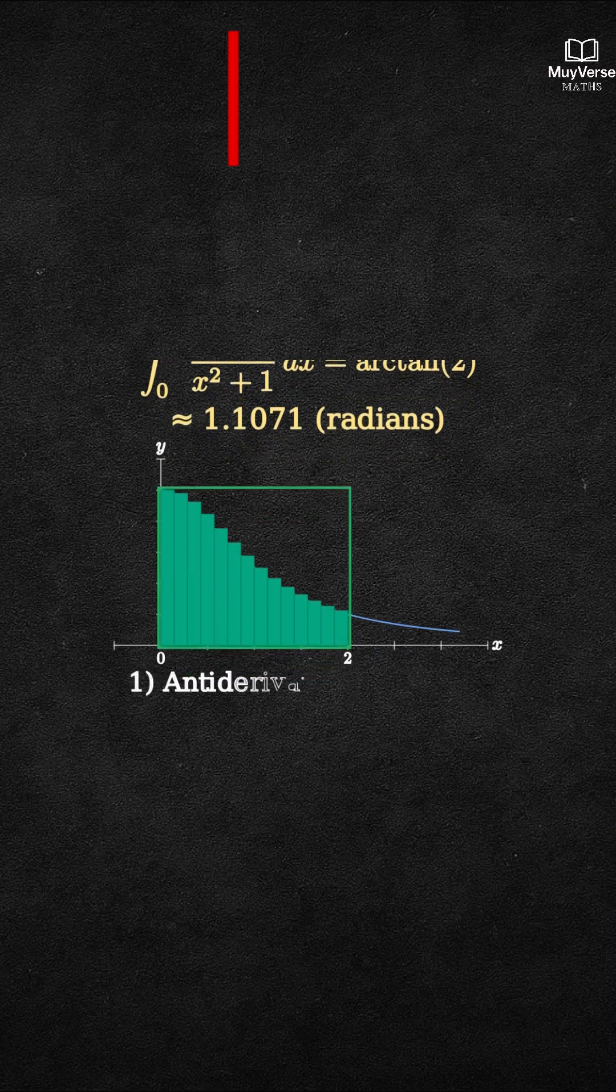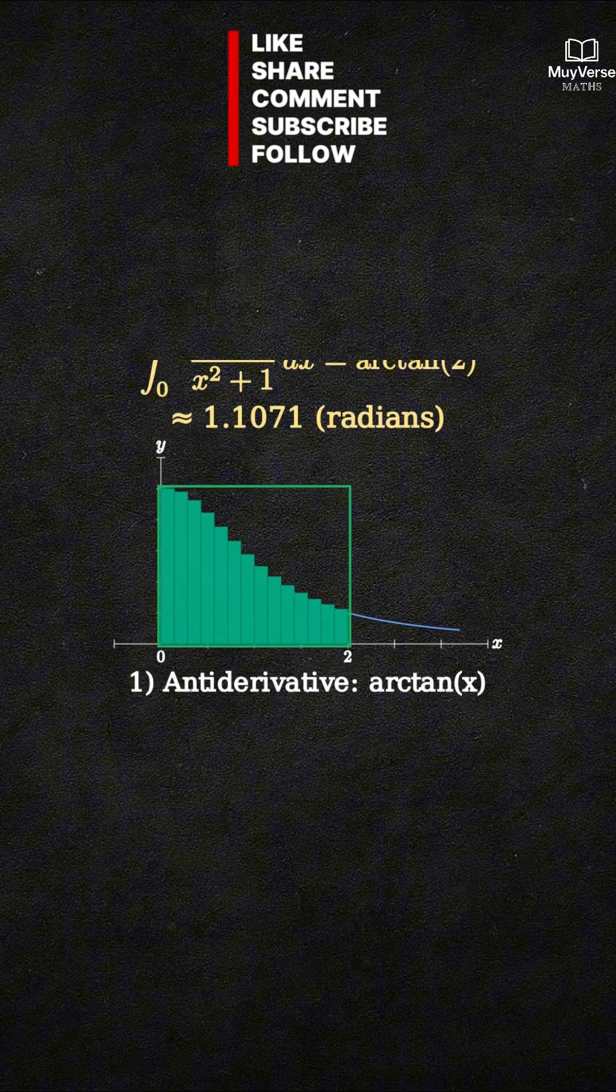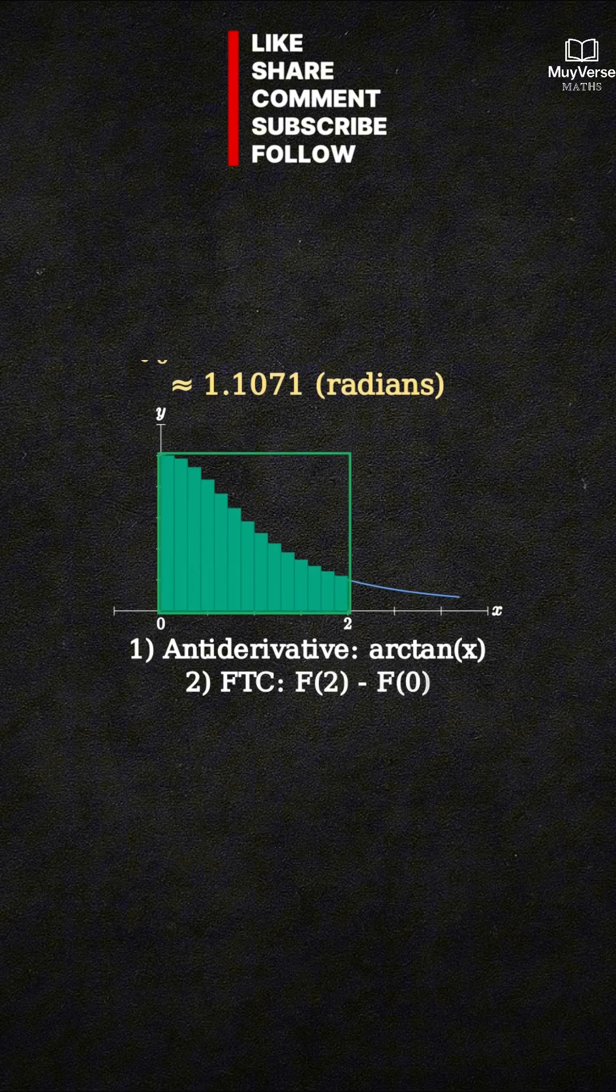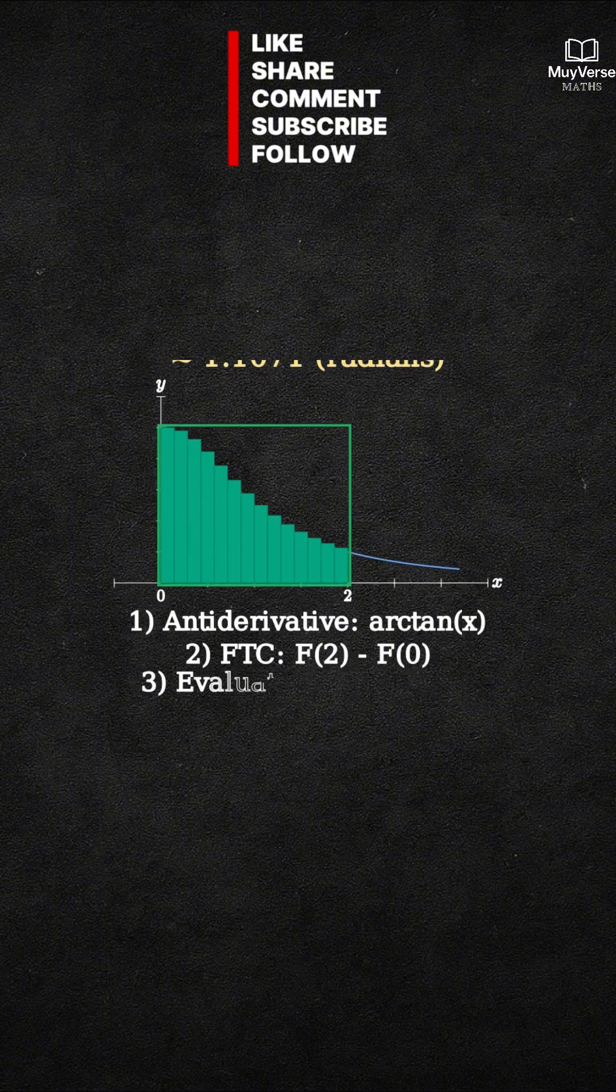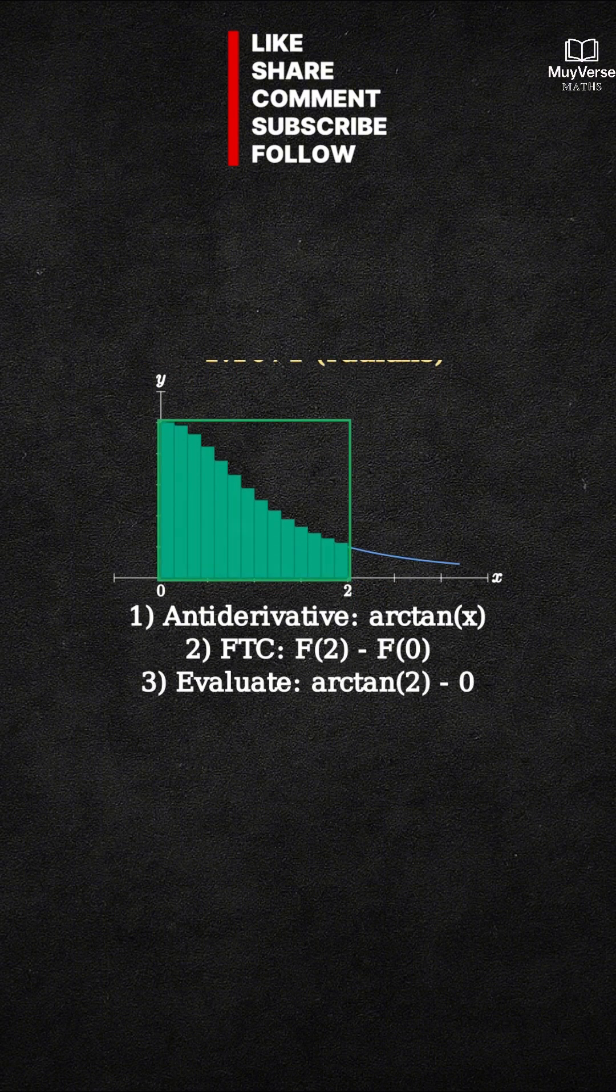Recap. 1. Identify the antiderivative arctangent of x. 2. Apply the fundamental theorem. Evaluate big F of 2 minus big F of 0. 3. Compute arctangent of 2 minus 0.